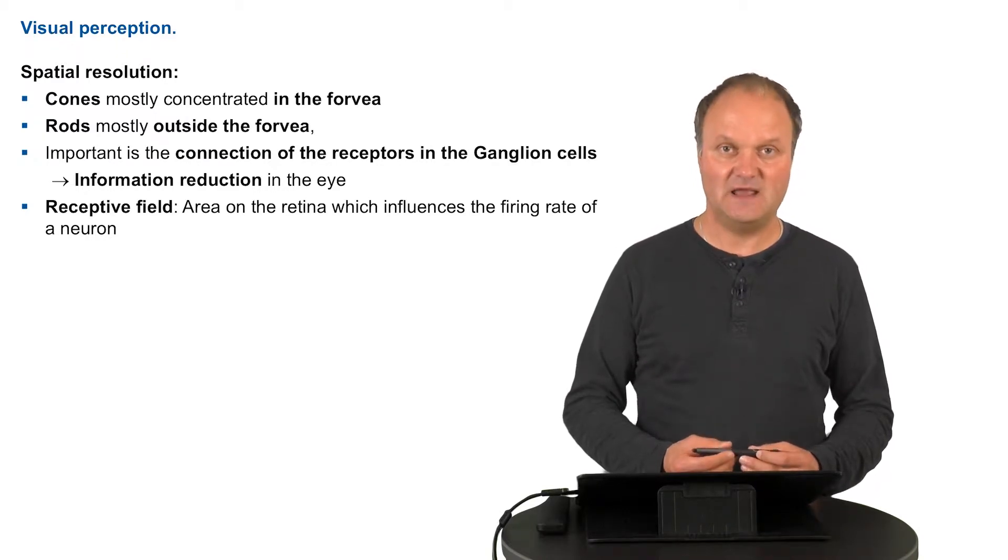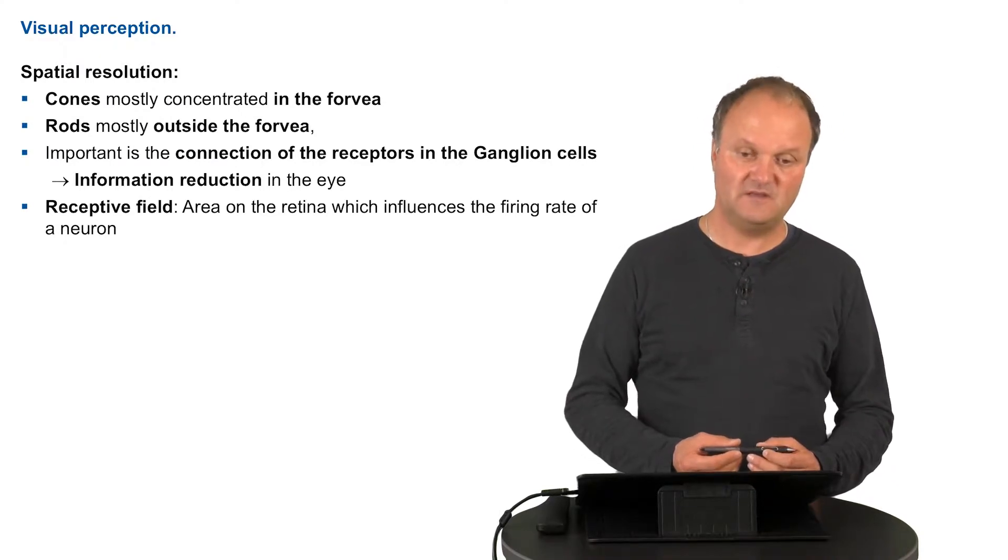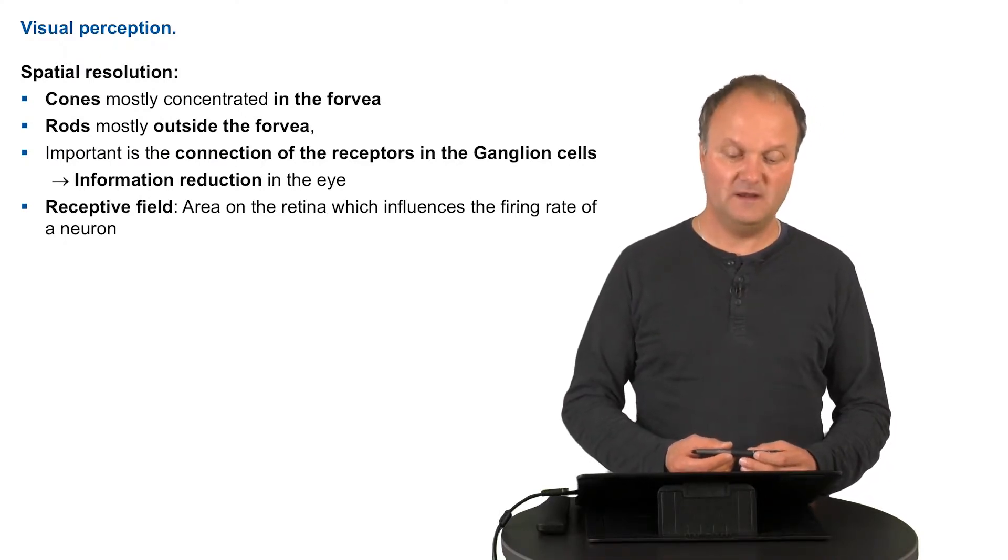In order to do so, an information reduction happens inside the eye by connecting these more than 100 million receptors to approximately only 1.6 million so-called ganglion cells. These ganglion cells are the ones which are processing the information and further forwarding it to the brain.